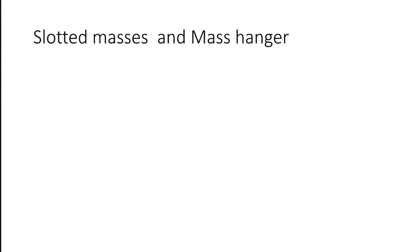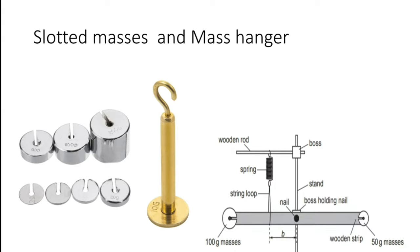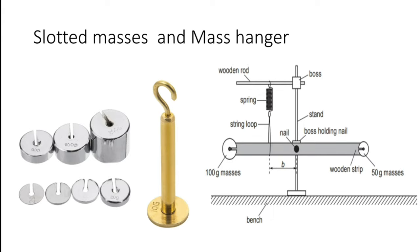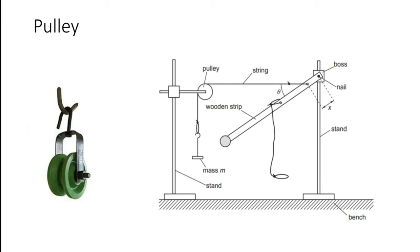Next is slotted masses and mass hanger. These are slotted masses, and this is the mass hanger. This is a laboratory setup where we are using them — this is just to show you. Next is pulley. This is a pulley, and this diagram shows how we use a pulley in our physics lab.